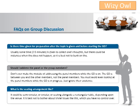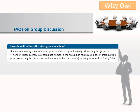What is the sitting arrangement like? It could be semi-circular, circular, or sitting alongside in a rectangular table, depending upon the venue. It is best not to bother about trivial issues like this which you have no control over. How should I address the other group members? If you are initiating the discussion, you could do this by collectively addressing the group as 'friends'. Subsequently, you could use names.